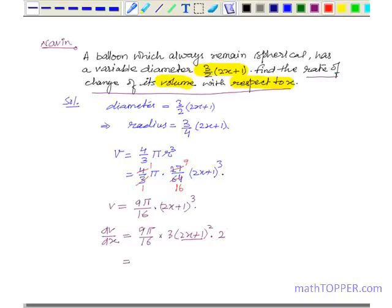We can cancel 2 and 16 and we get 27π/8 times (2x + 1)² as the required rate of change of volume with respect to x. And this is the end of the session.